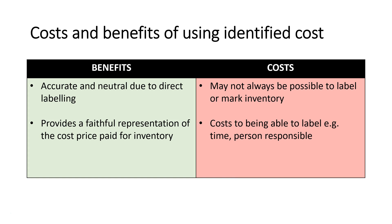So what are the costs and benefits of identified cost? The benefit is that it's accurate and neutral — we know exactly which stock has which cost price due to our labeling, which gives us a really good chance of achieving faithful representation in our records and reports. It's very accurate in terms of knowing which cost price belongs to which item.